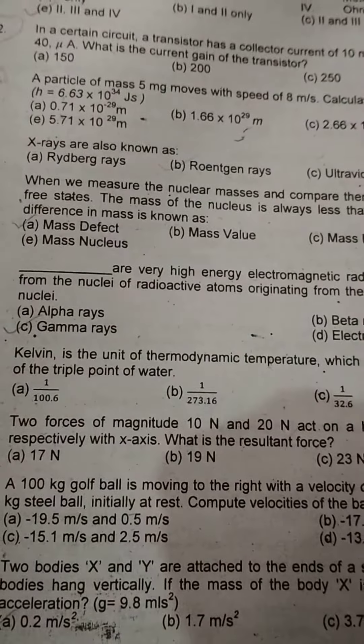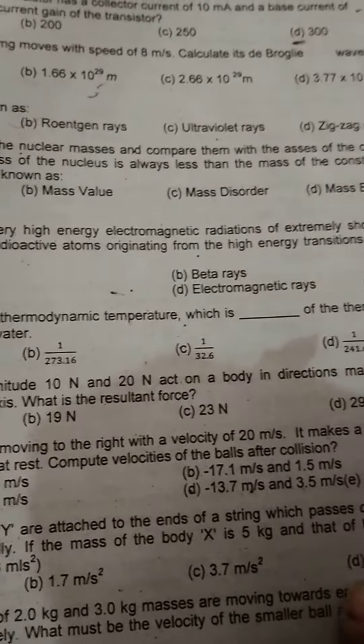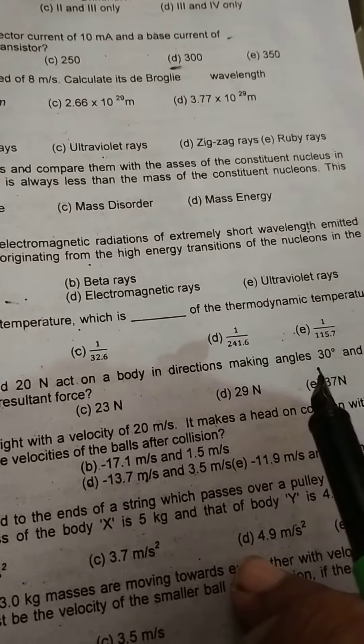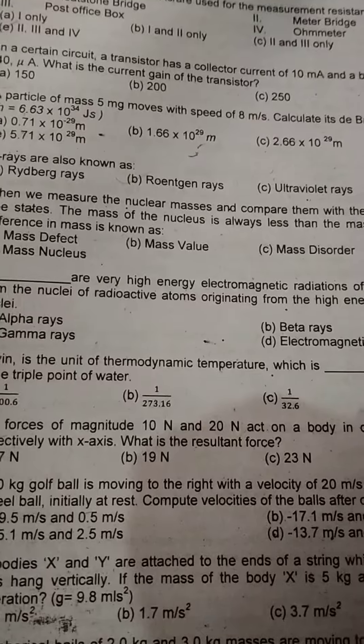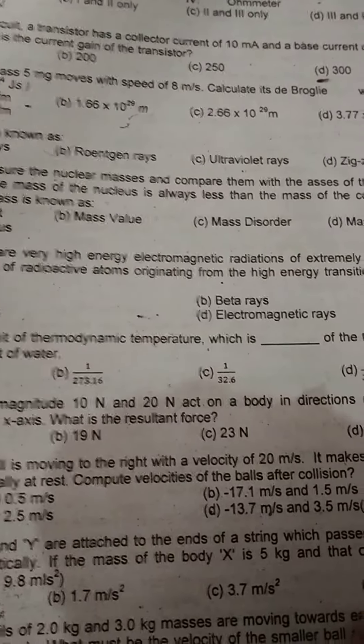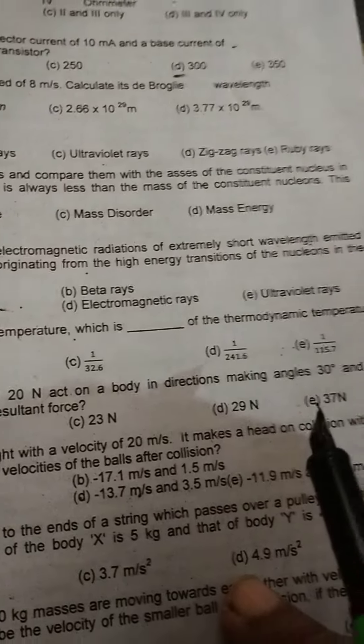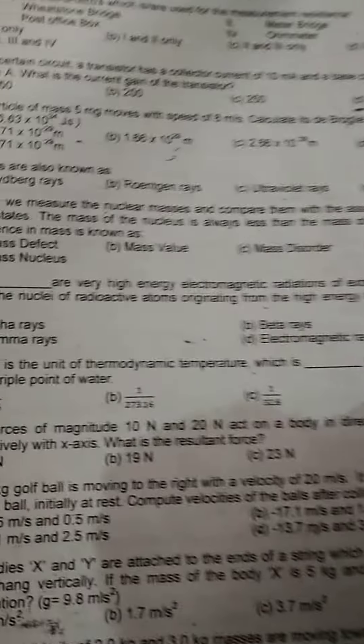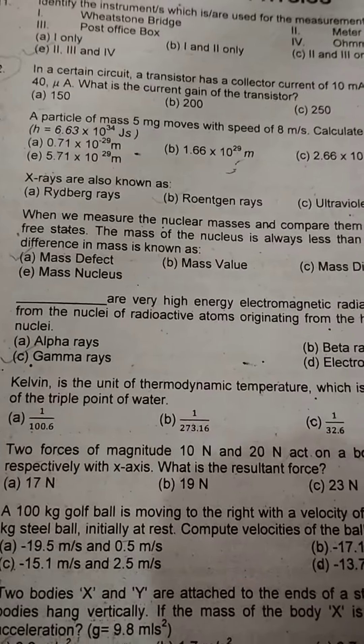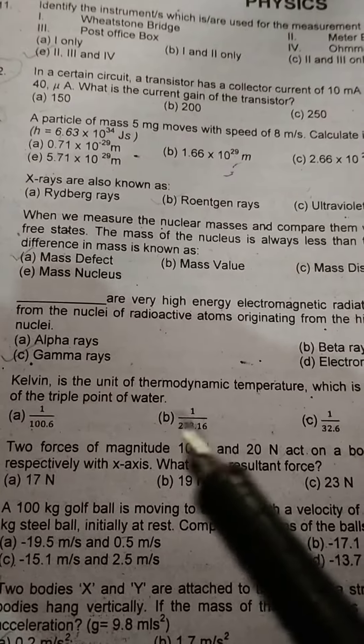This is called mass defect. Gamma rays are very high energetic electromagnetic radiation of extremely short wavelength emitted from the nuclei of radioactive atoms, originating from the high energy transition of the nucleus. This is the correct option of gamma rays.